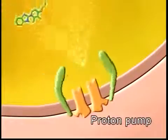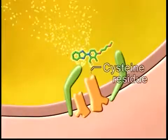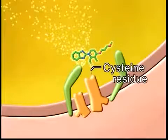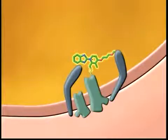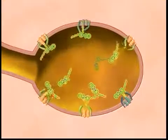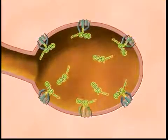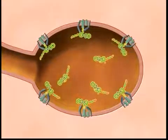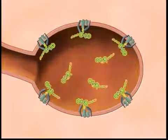The active compound so formed binds to particular cysteine residues of the proton pump. The cysteine residues are attainable from the side of the acid-accumulating lumen. Then gastric acid secretion is inhibited.